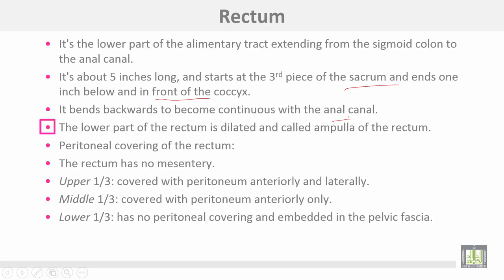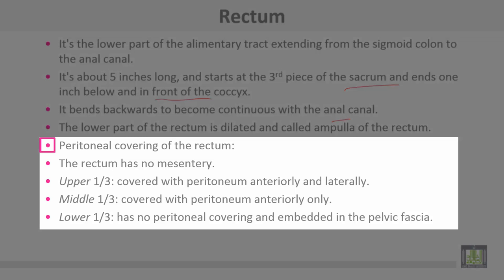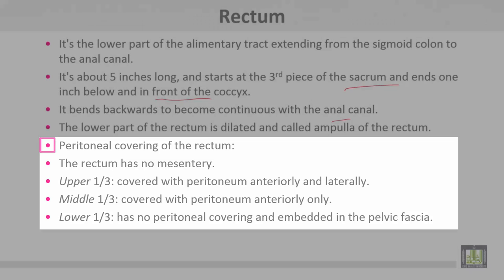The lower part of the rectum is dilated and called the ampulla of the rectum. Regarding peritoneal covering: the rectum has no mesentery. The upper third is covered by peritoneum anteriorly and laterally, the middle third is covered by peritoneum anteriorly only, and the lower third has no peritoneal covering and is embedded in the pelvic fascia.